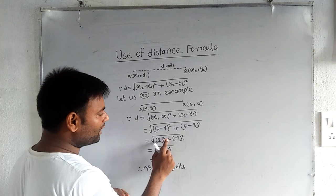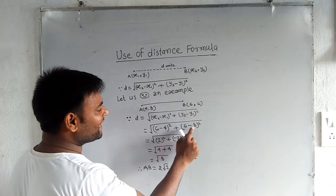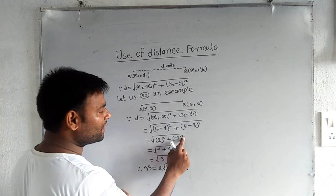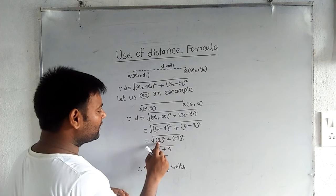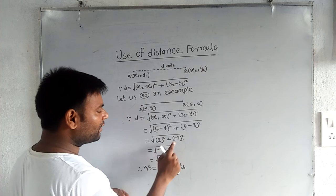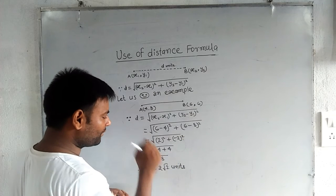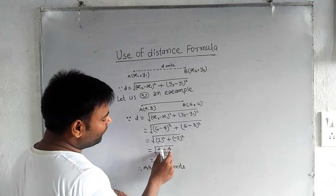6 minus 4 is equal to 2, 2 to the power 2 plus 6 minus 8 is equal to -2, -2 to the power 2. 2 to the power 2 is 4, then 4 plus 4 is 8.